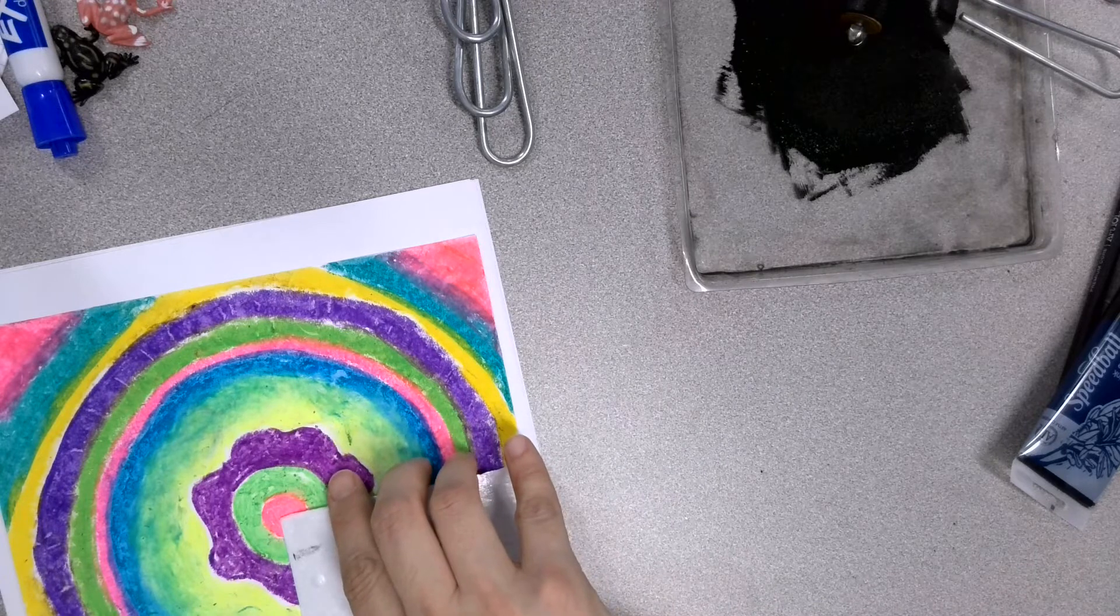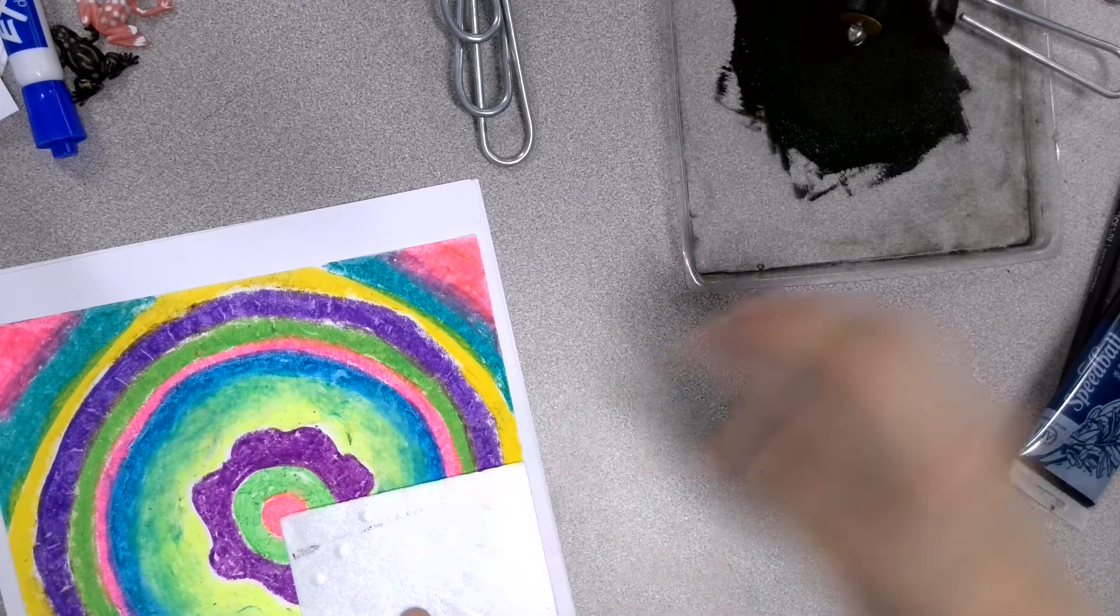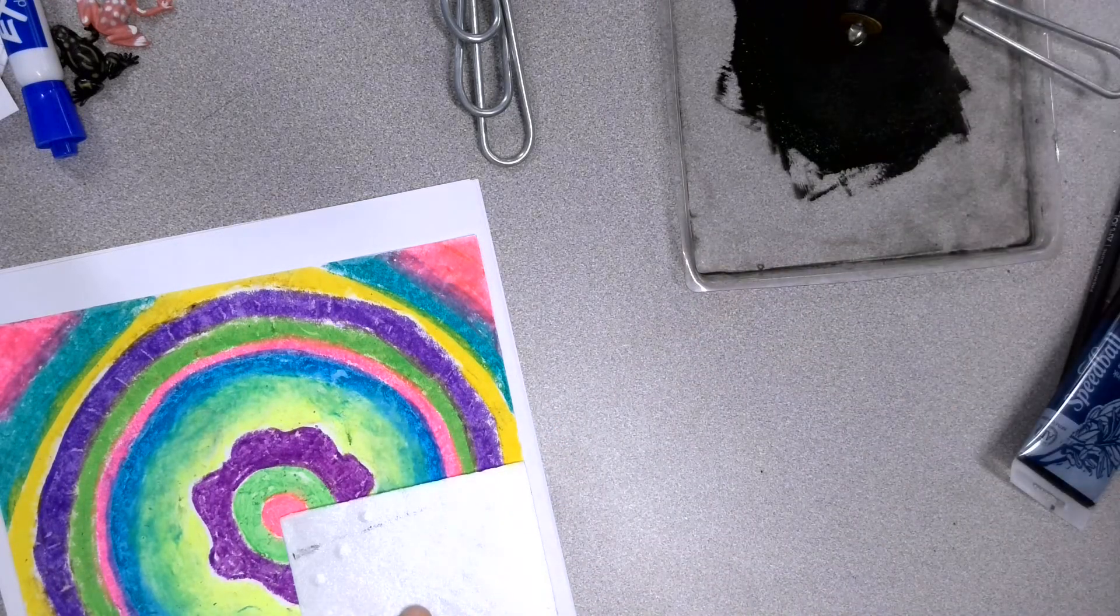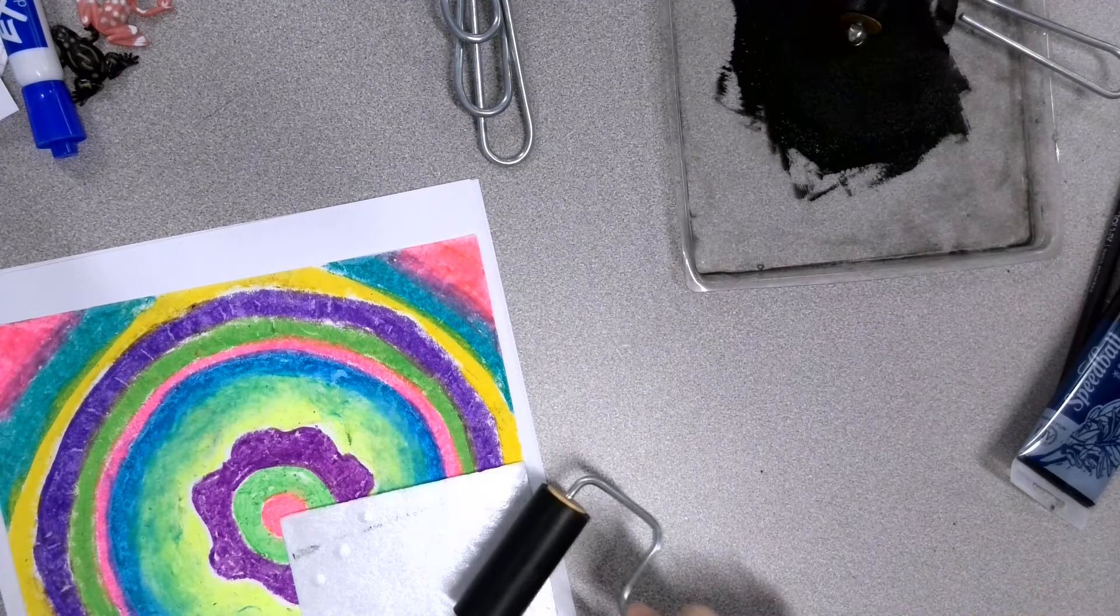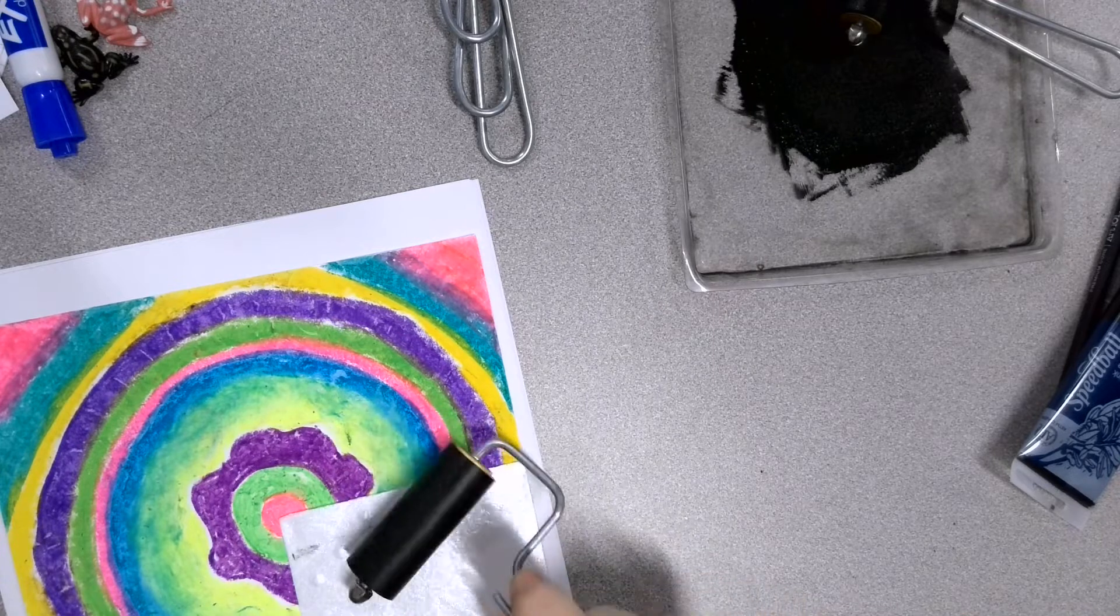I'm going to line it up with the edge of the paper. Once it touches the paper, the ink's on there, so hopefully you don't mess up. I'm going to take one of these brayers. It doesn't have ink on it, and I'm just rolling it. Why do you think I'm rolling it?